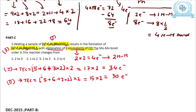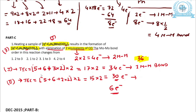Since complex 1 has a total electron count of 34, and 36 is needed for stability, it is 2 electrons less, resulting in 1 metal-metal bond. Since complex 2 has a total electron count of 30, and 36 is needed for stability, it is 6 electrons less, and these 6 electrons result in the formation of 3 metal-metal bonds.